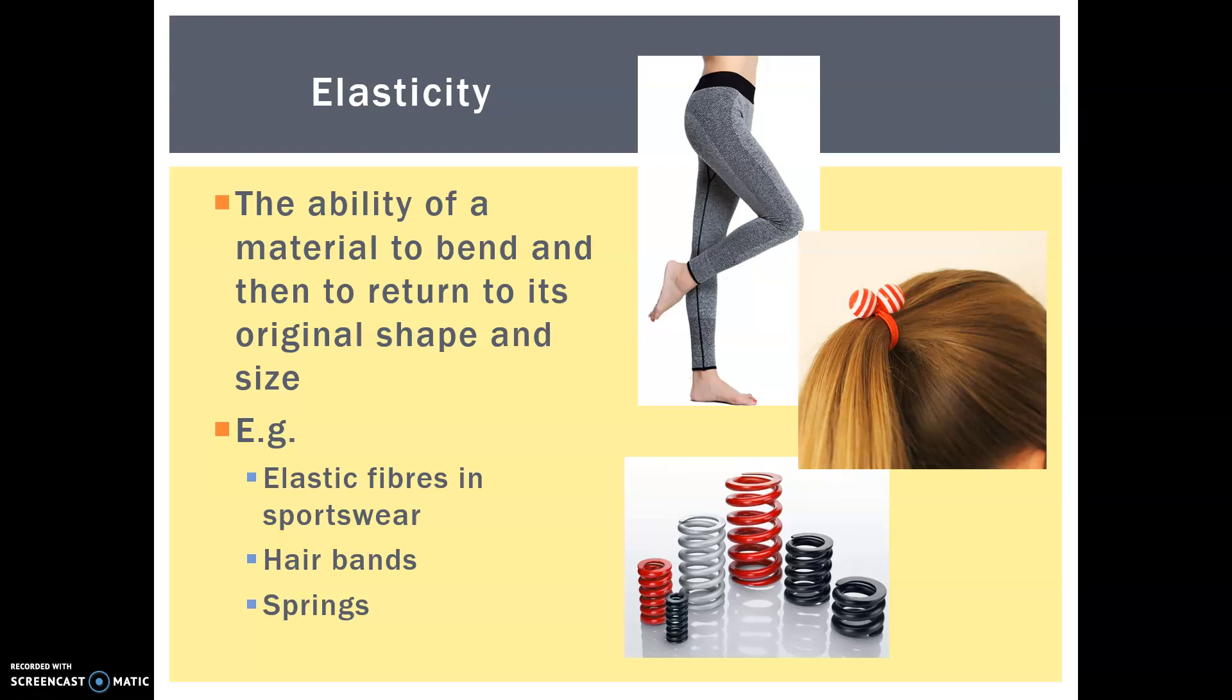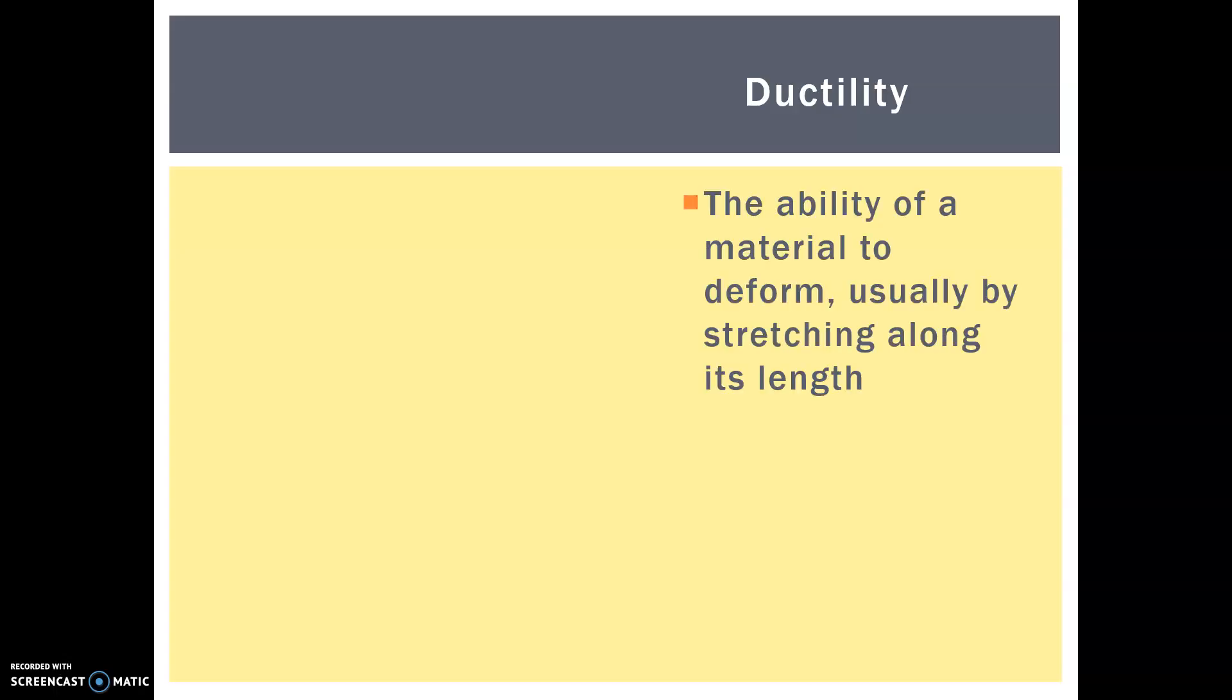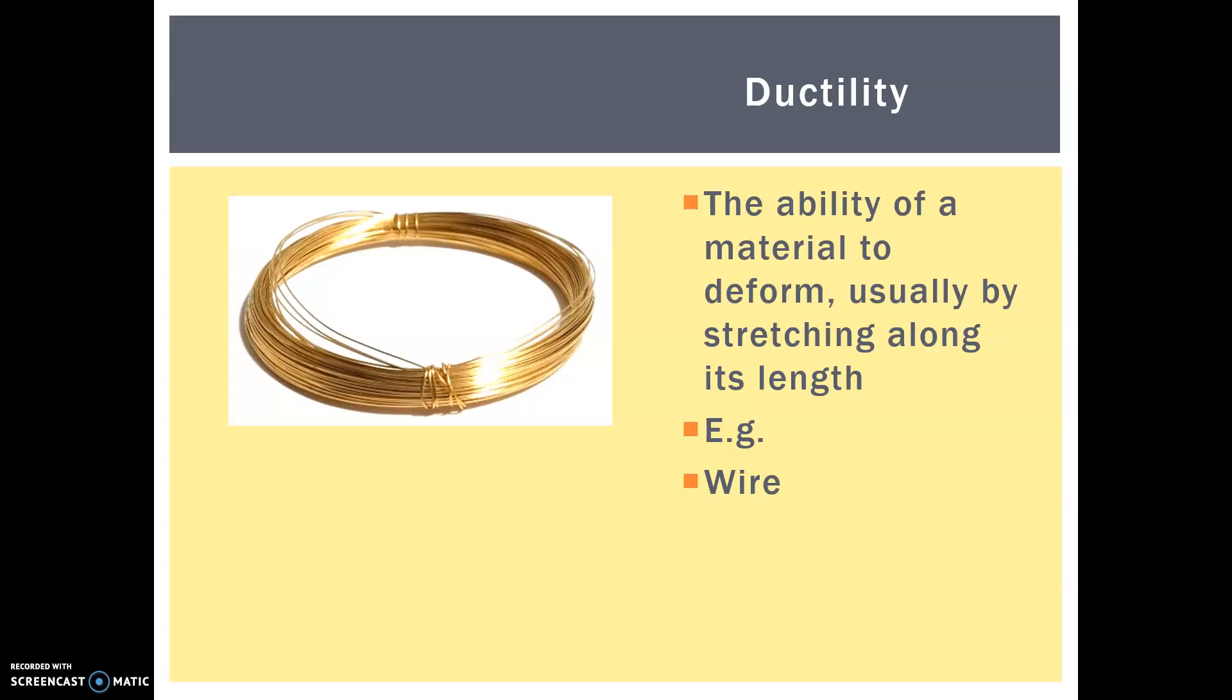Ductility is the ability of material to deform by stretching along its length. So wire, for instance, is incredibly ductile. You need to be able to take this raw metal material and stretch it out into a long, thin wire. Now to help you with this one, because ductility is one that often gets forgotten.